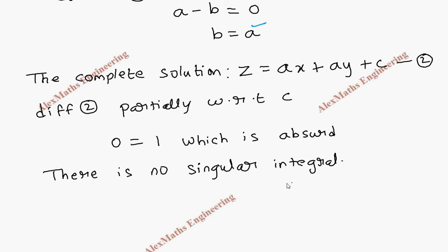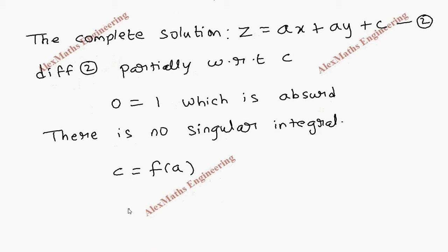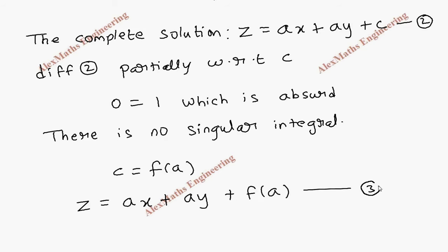Now we take the constant c as a function of a, and substituting this into expression 2, we get z equal to ax plus ay plus f(a). Let's keep this as the third expression.